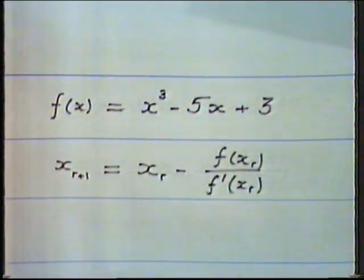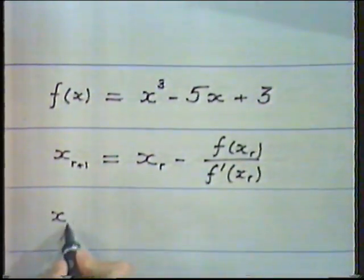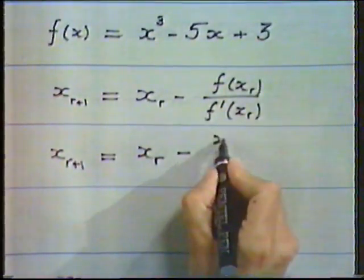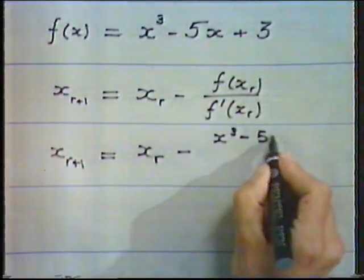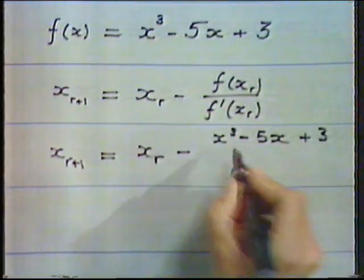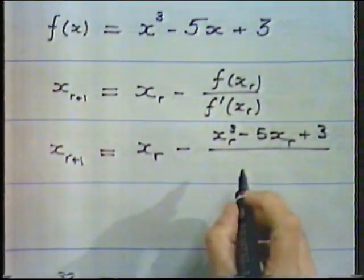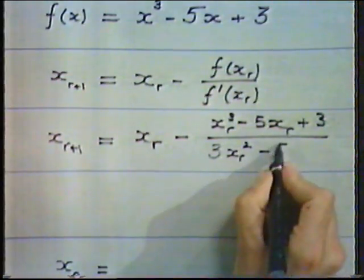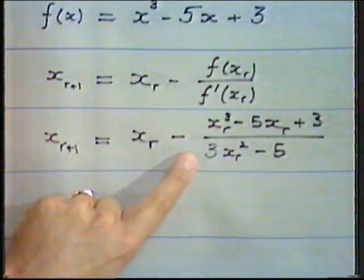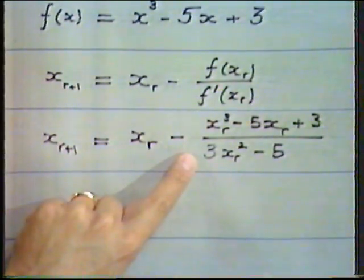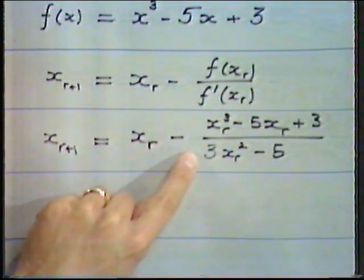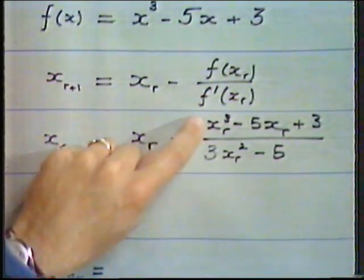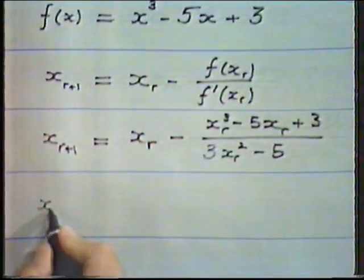Here's the equation and here's Newton's method. All that remains is to write Newton's method with our function: x_{r+1} = x_r minus (x^3 - 5x + 3) divided by the derivative, which is 3x_r squared minus 5. This formulation isn't very useful for the calculator, so I'm going to rewrite this equation using nested multiplication.